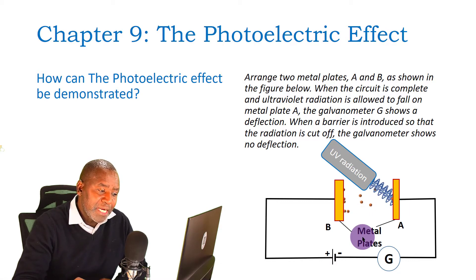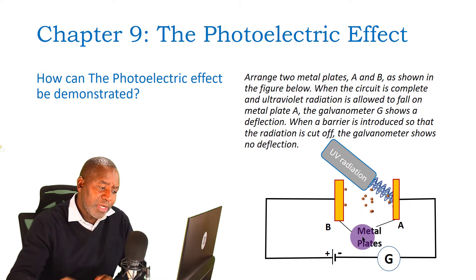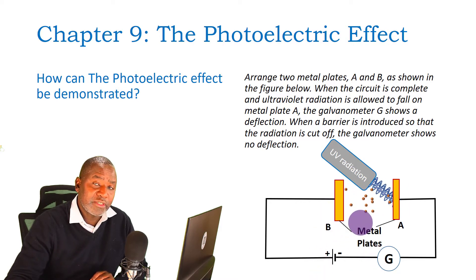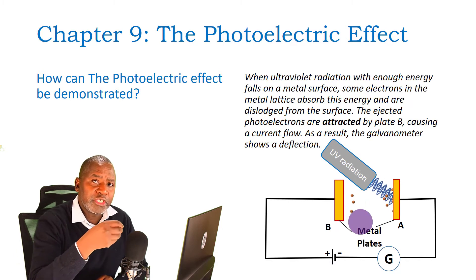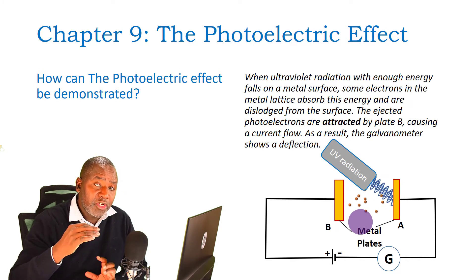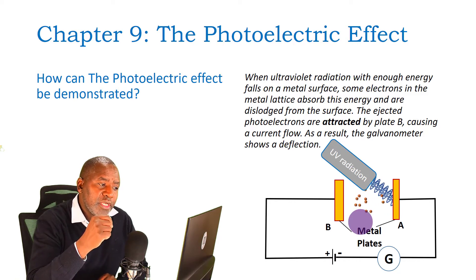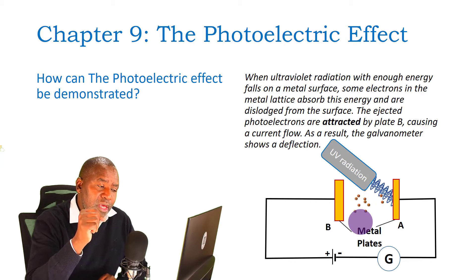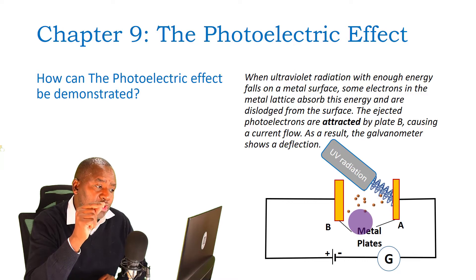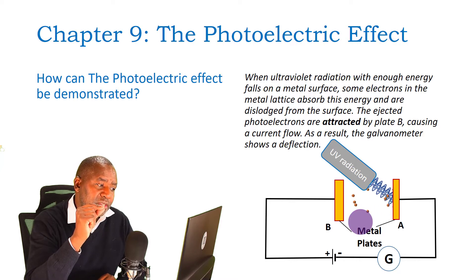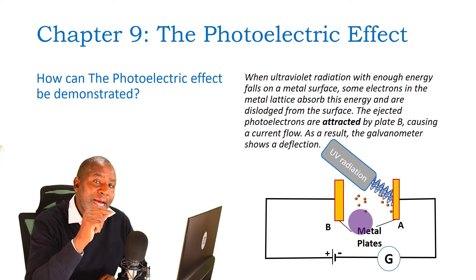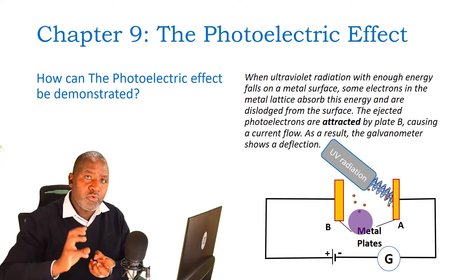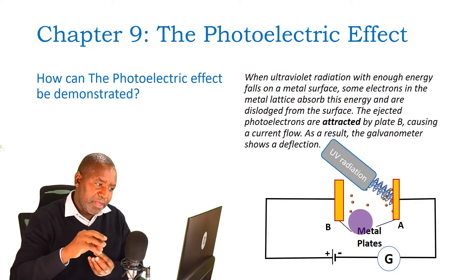The movement of these electrons in that space completes the circuit, and that is why current flows. This is one of the setups which can be used to demonstrate photoelectric effect. The explanation given in your books states that when UV radiation with enough energy falls on a metal surface, some electrons in the metal lattice absorb this energy and are dislodged — 'dislodged' means removed from a slot, from the metal surface.